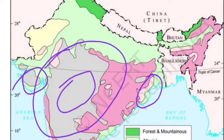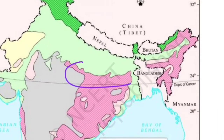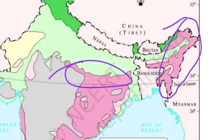Red and yellow soil is found in areas with very low rainfall. On the map it is marked with pink stripes. You find it in Orissa, Chhattisgarh, the southern parts of the middle Ganga plain, and in the Purvanchal regions, with the maximum concentration in the south.